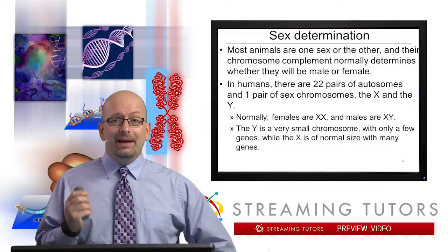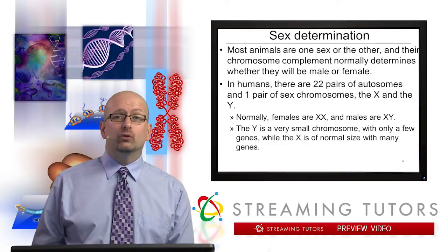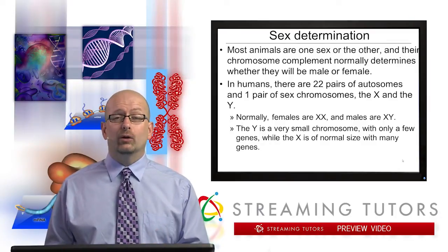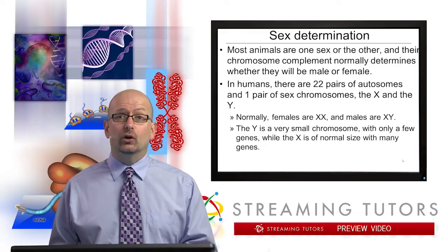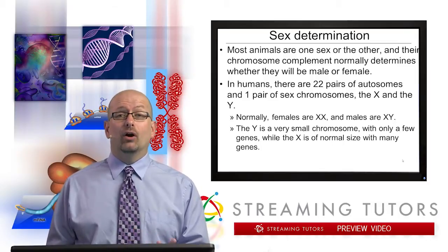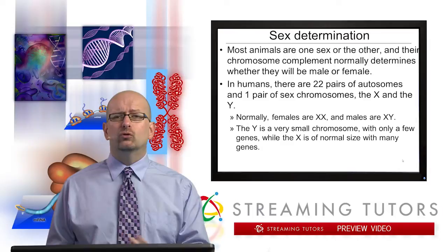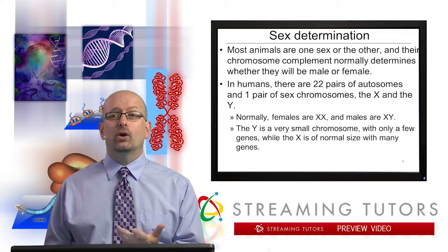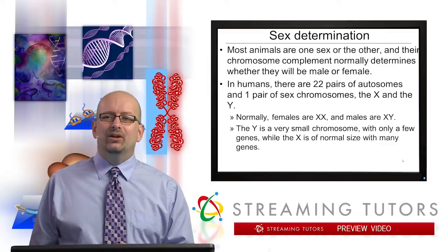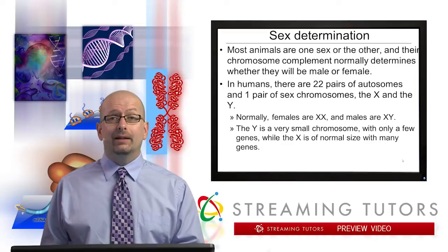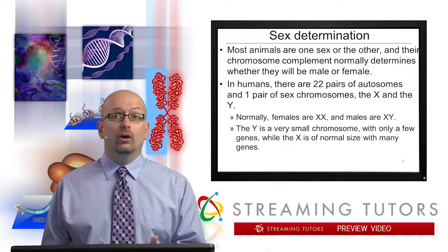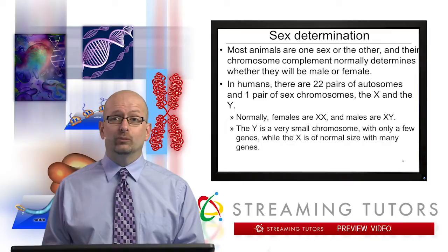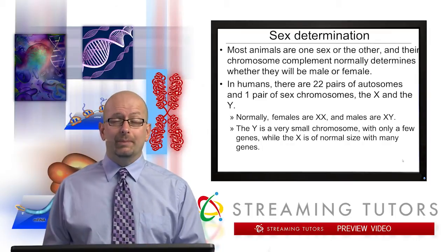It may seem like an obvious statement to say that most animals are either one sex or another. Certainly that's normally true for human beings — we're either male or female. In many cases this isn't actually true; there are many true hermaphroditic animals. But we want to start in the most simple way, assuming animals like a human being are one sex or the other. The chromosome complement of males and females — let's just use humans — we both have 46 chromosomes, and a certain particular aspect of that chromosome complement will normally determine whether someone develops as a male or as a female.